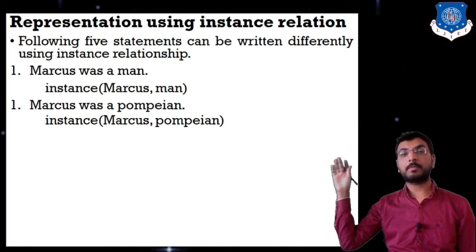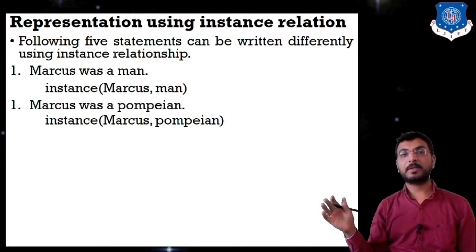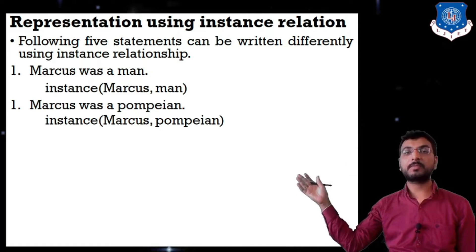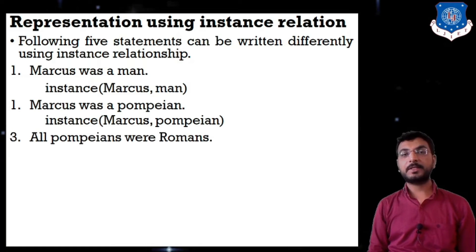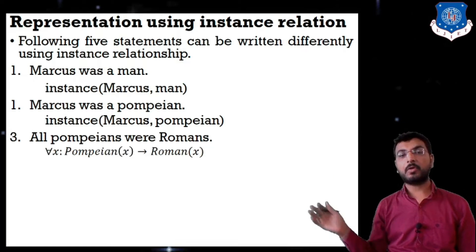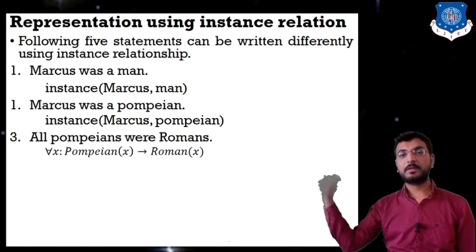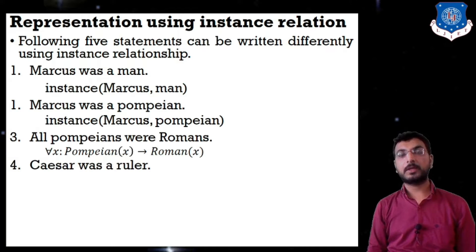Pompeian is like a class — a province or caste of Rome. For example, we are Gujarati, so Gujaratis are Indian; likewise Marcus was Pompeian, a province in Rome. Third statement: 'All Pompeians were Romans' is represented as: for all x, if pompeian(x) then roman(x).